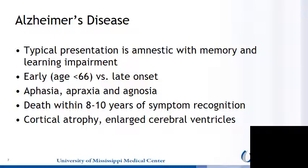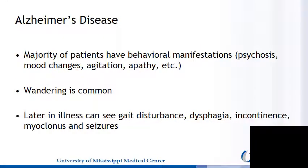Aphasia, apraxia, and agnosia are prominent features of Alzheimer's Disease. Death typically occurs within 8 to 10 years of symptom recognition. On imaging and/or autopsy, there is evidence of cortical atrophy and enlarged cerebral ventricles. The majority of patients have behavioral manifestations, which might include psychosis, mood changes, agitation, and apathy.